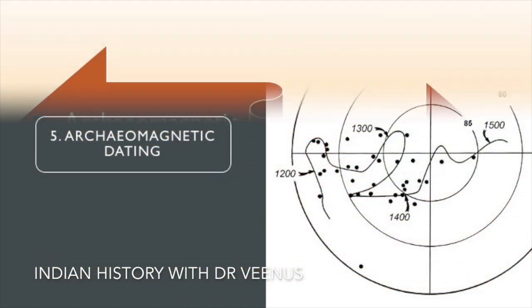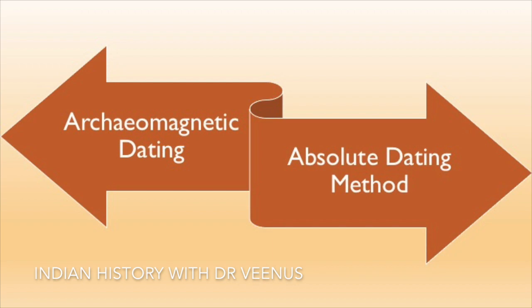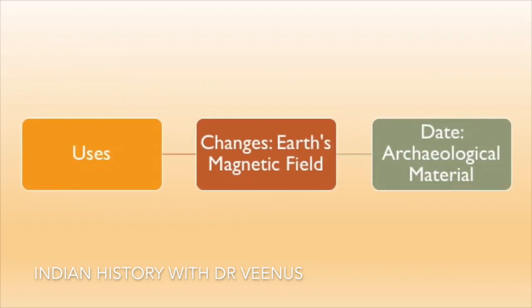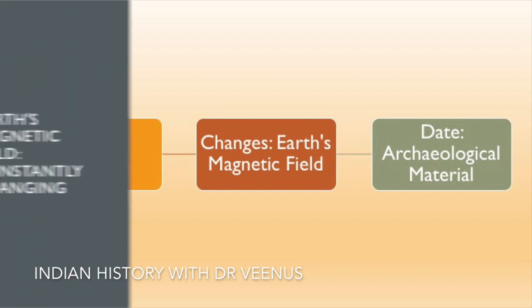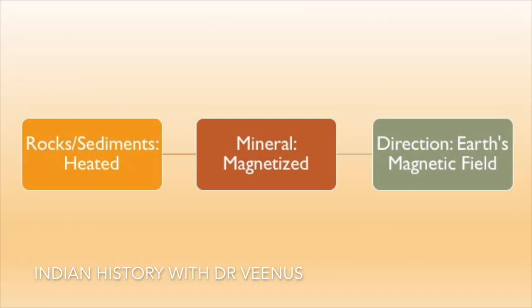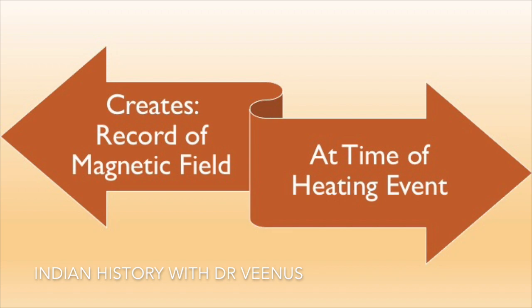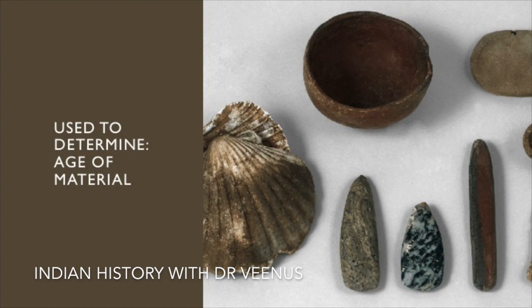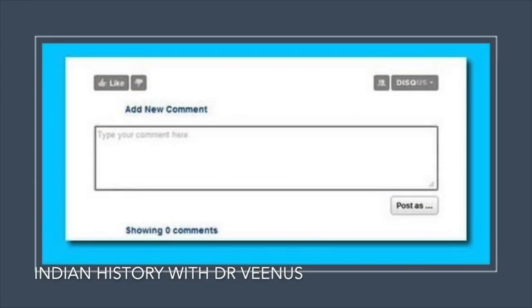Archaeomagnetic dating is a method of absolute dating that uses changes in the earth's magnetic field to date archaeological material. The earth's magnetic field is constantly changing, and when rocks or sediments are heated, the minerals in them become magnetized in the direction of the earth's magnetic field at the time. This creates a record of the magnetic field at the time of the heating event, which can be used to determine the age of the material.